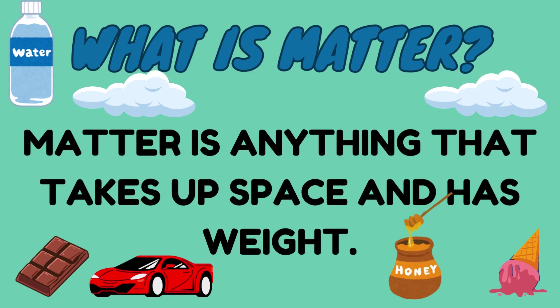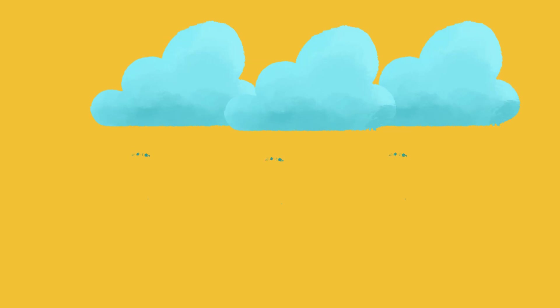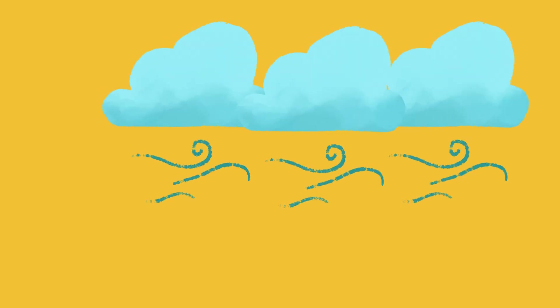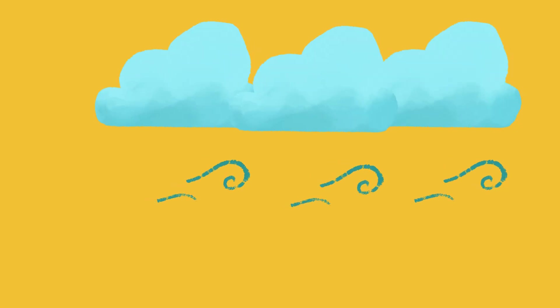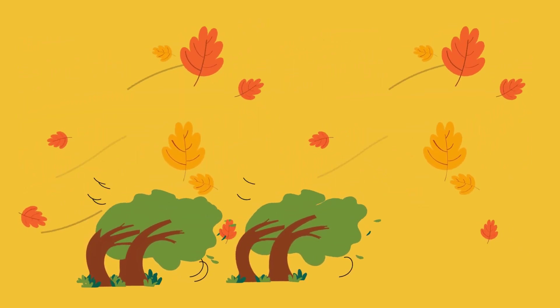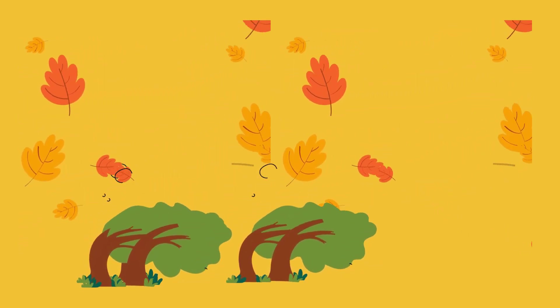What is matter? Matter is anything that takes up space and has weight. This shows that all objects around us which have weight and take space are matter. Matter is everywhere. In this world, everything is made up of matter. Air around us is matter.